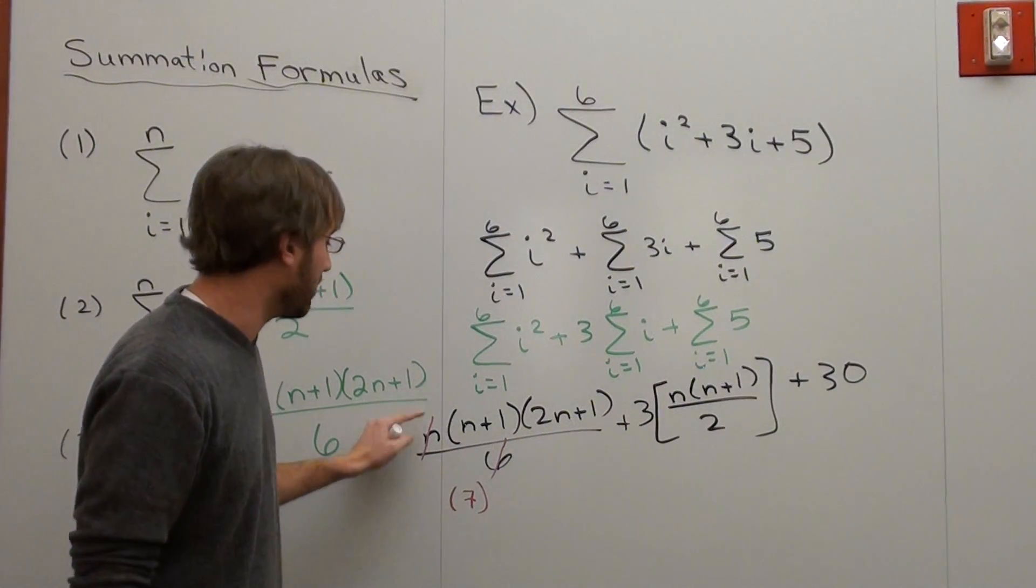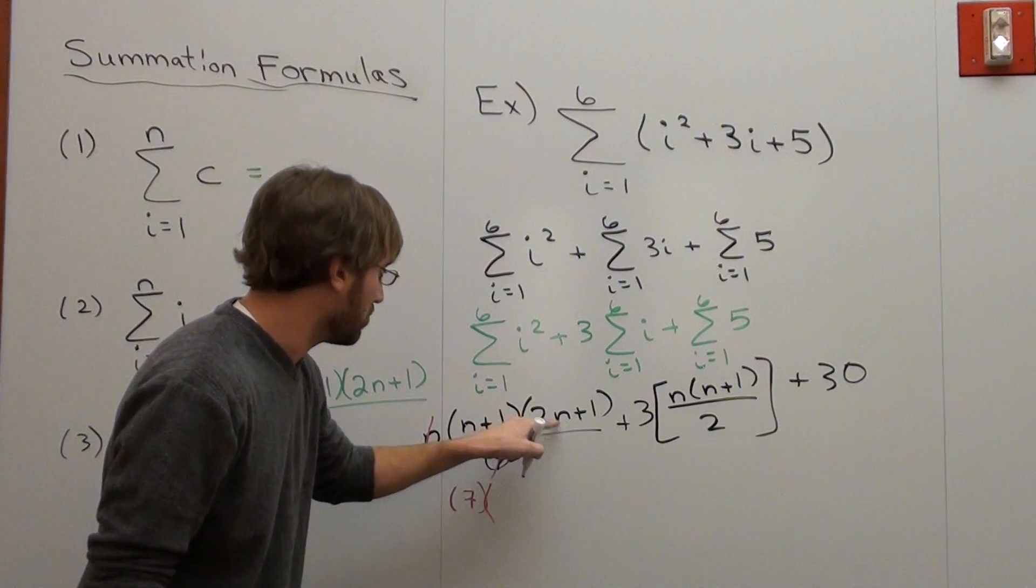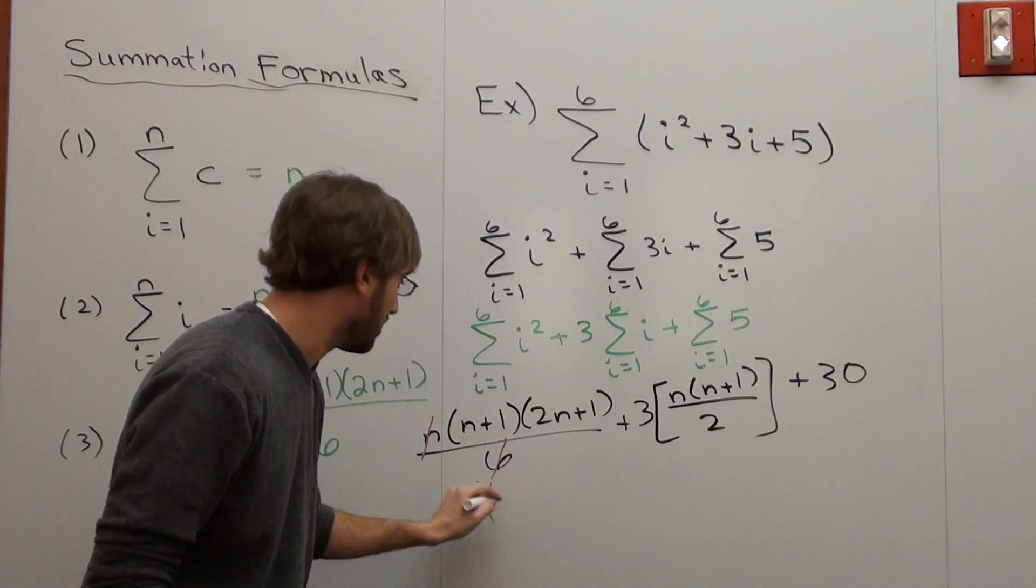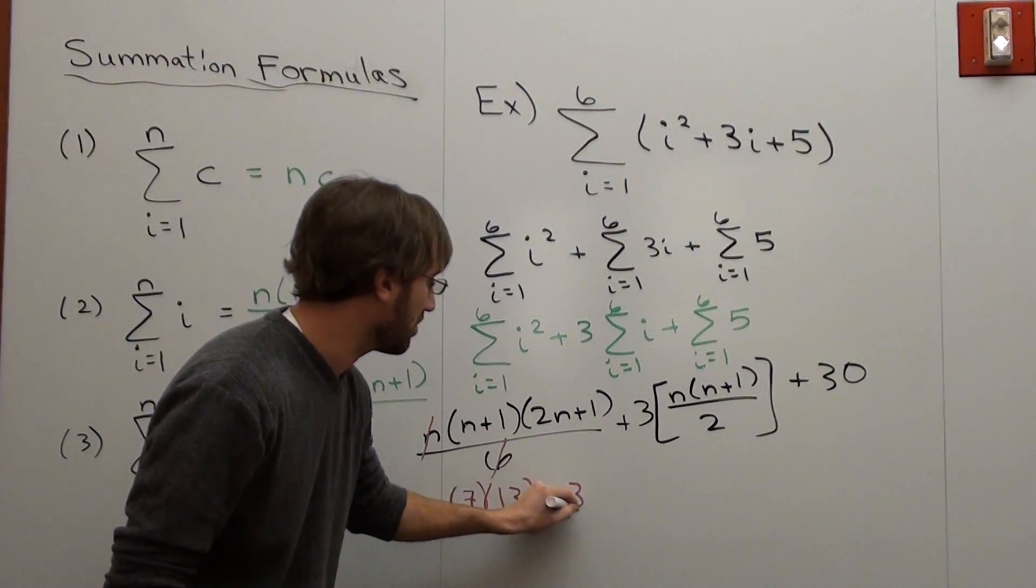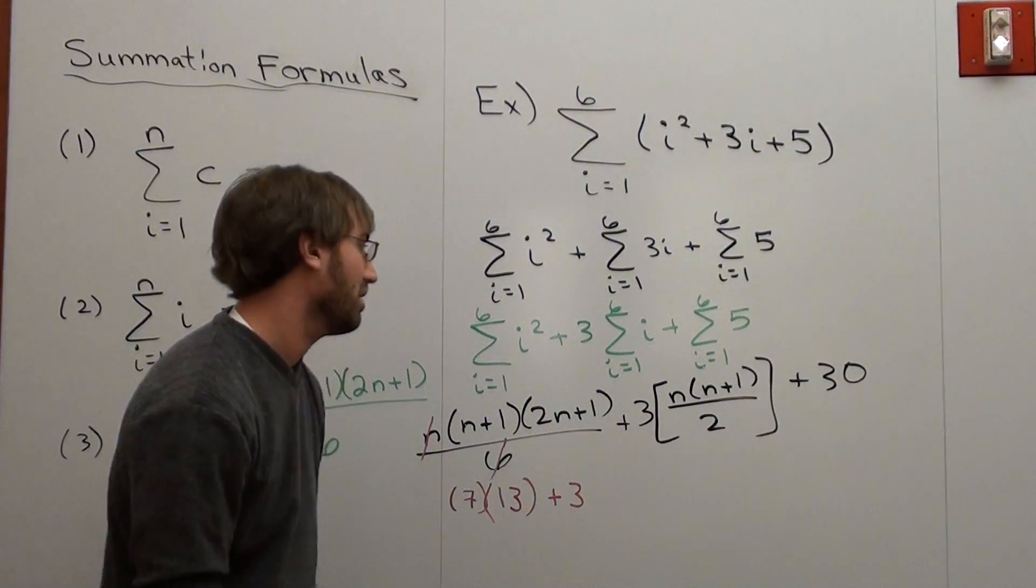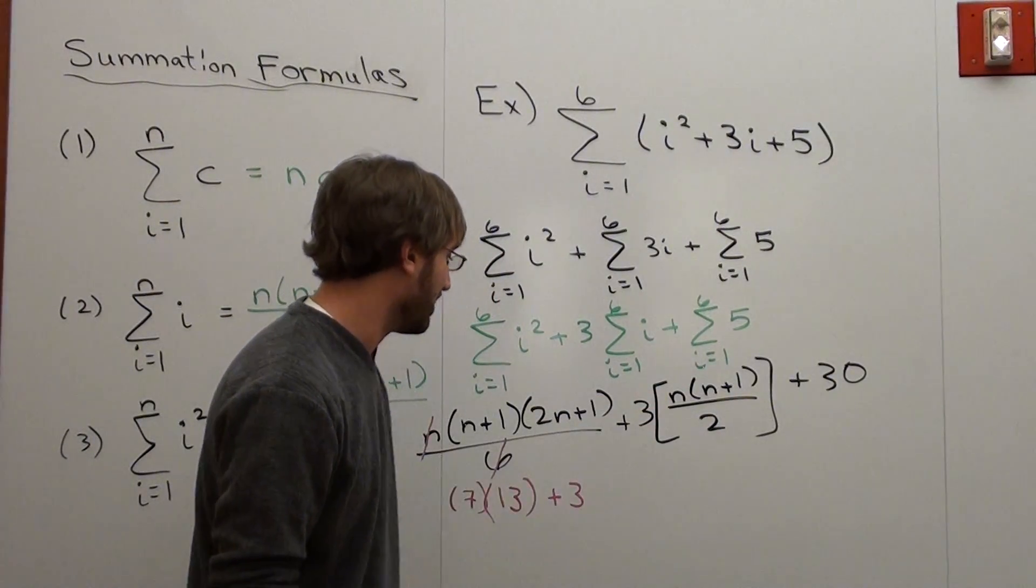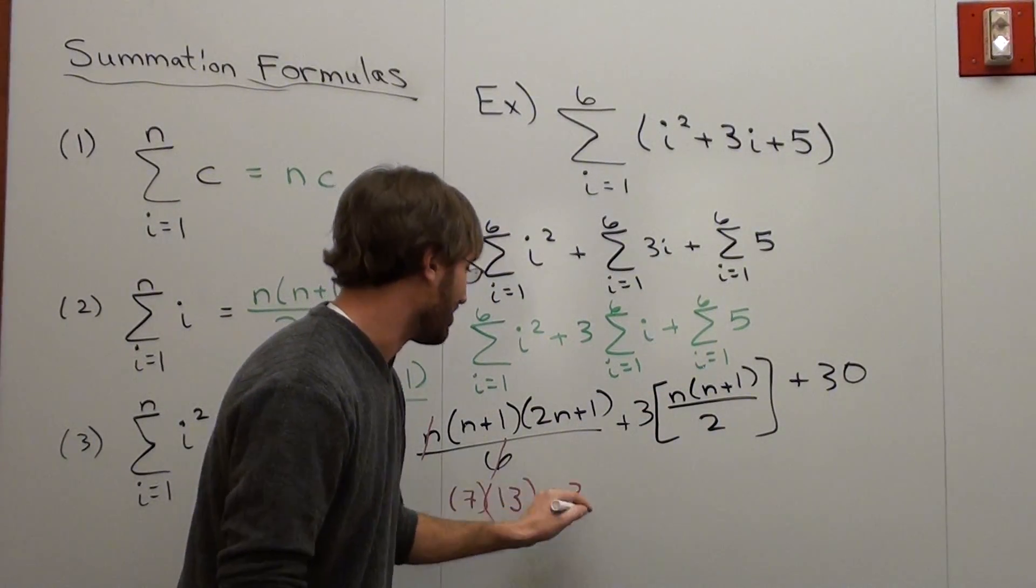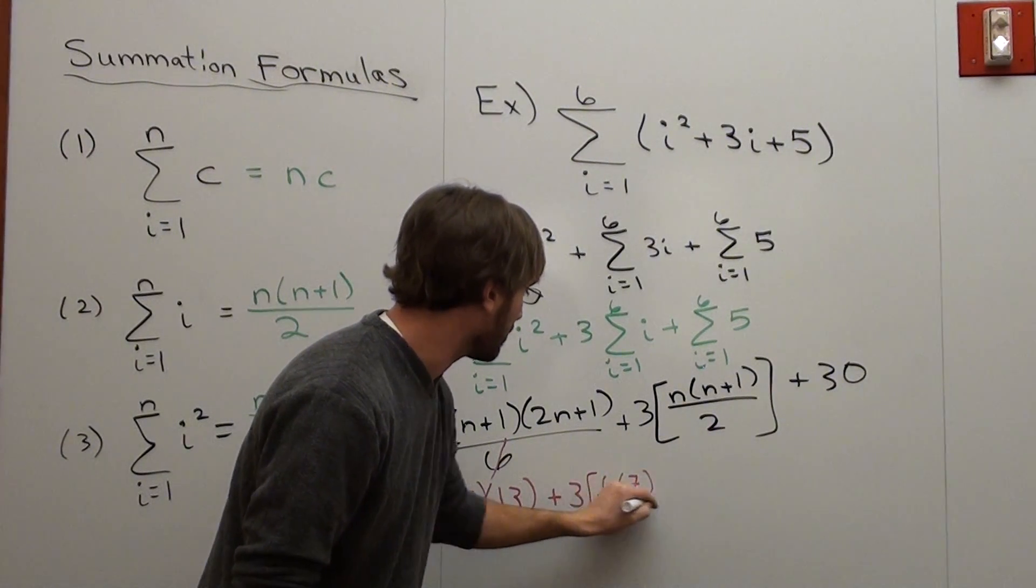Now, this is 2 times 6, which is 12, plus 1, which is 13. That's not so bad. Plus 3 times 6 times... let's just go ahead and write it out. That's not a big deal. 6 times 7 over 2. And then that's plus 30.